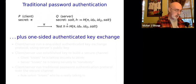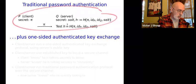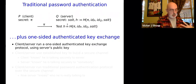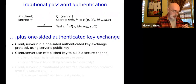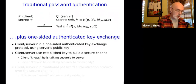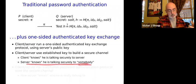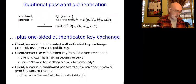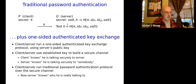What's replaced that, and what's actually quite widely used today, is combining this basic password protocol with one-sided authenticated key exchange. The client and the server run a one-sided authenticated key exchange protocol using just the server's public key — we assume clients don't have public keys. Once this secure channel is established, the client knows he's talking securely to the server, though the server doesn't yet know who he's talking to. Then the client and server use the secure channel to run the simple protocol, after which the server knows he's talking to someone who knows the password.